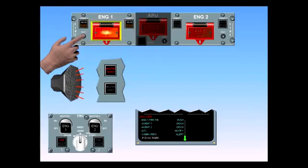Observe: The engine one fire push-button switch illuminates red. Squib and discharge lights come on. The master warning light illuminates red. The CRC sounds. The engine one fire warning on the ECAM appears, and the fire light on the engine panel illuminates.